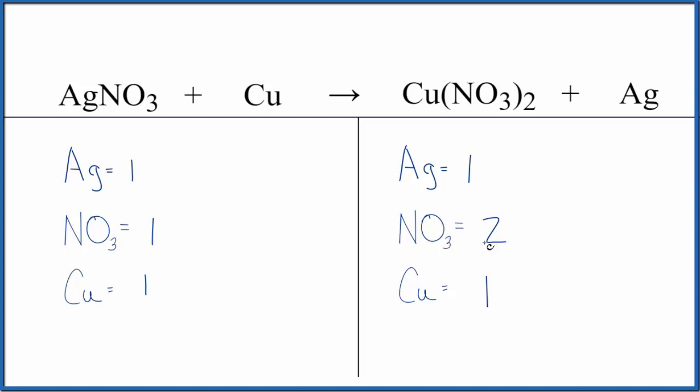Because now we could see that if we put a two in front of the AgNO3, we'd have one times two for the silver. But then this two goes to everything, so we'd have the one nitrate times two. That gives us two nitrates. They're balanced. And all we need to do is put a two here. One times two. We're done. This equation is balanced.